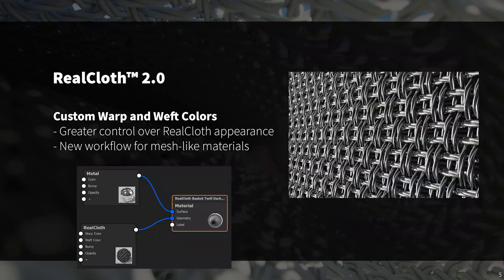Another great update to Real Cloth is custom warp and weft colors. Using the material graph, you can now easily apply custom surface materials to cloth applications while still maintaining the real cloth geometry. This makes it incredibly easy to create materials such as metal or plastic meshes for a number of different product applications. You can see a close-up of a metal mesh material I created, as well as a screenshot of that material's material graph — super easy and very quick to do.